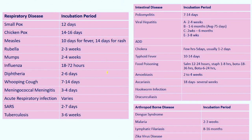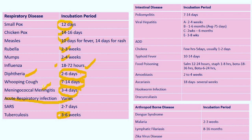Now incubation periods — we need to compare and study these. Acute respiratory infection always varies. Most diseases will be two to three weeks: chickenpox, measles, rubella, mumps are all two to three weeks; smallpox is also approximately 12 days. Influenza is the shortest — 18 to 72 hours. Diphtheria is less than a week. Whooping cough is one to two weeks. Meningococcal meningitis is three to four days. So diphtheria, meningococcal meningitis, and SARS can be kept within less than a week; whooping cough one to two weeks; chickenpox, measles, rubella, mumps in two to three weeks; influenza in hours.